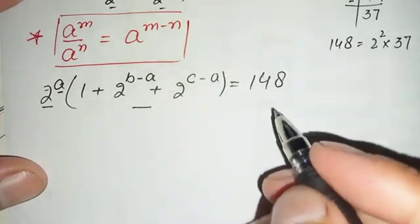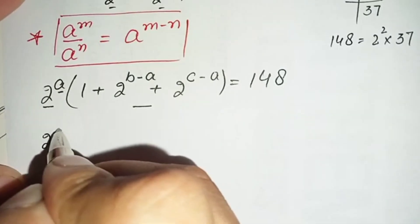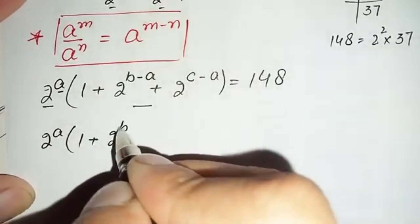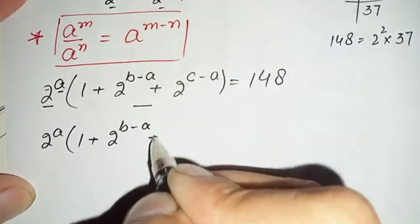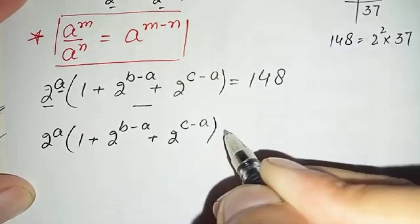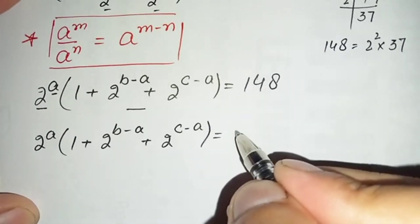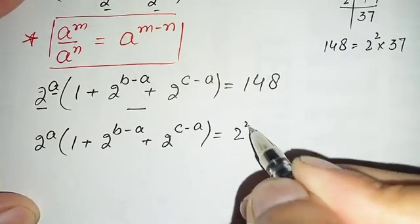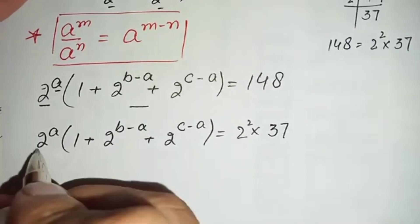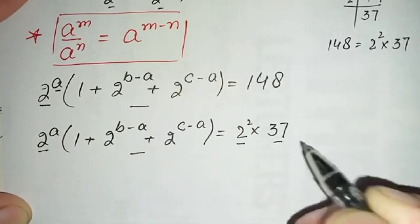So we can write 148 as 2 raised to power 2 times 37. In the next step, we replace 148 with this prime factorization. The equation becomes: 2 raised to power a times 1 plus 2 raised to power (b minus a) plus 2 raised to power (c minus a) equals 2 raised to power 2 times 37.